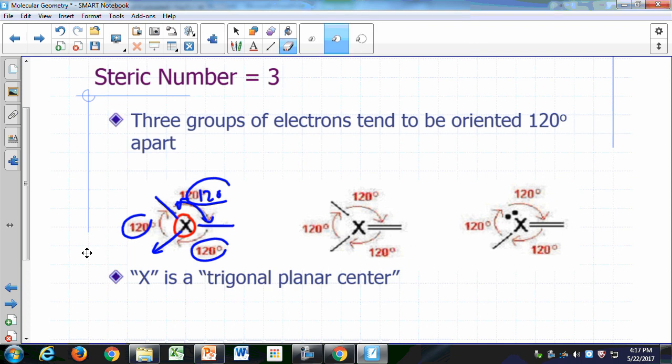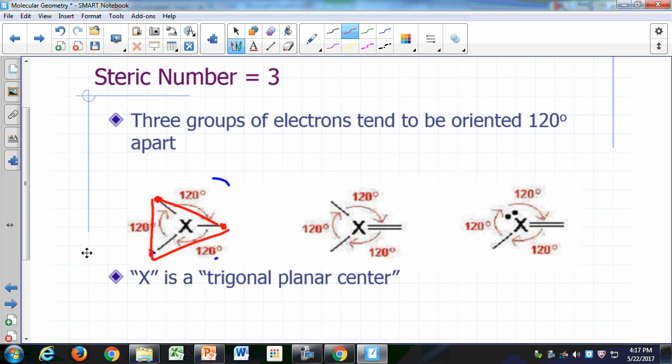You can see, if you were to imagine you have an atom at the end of each of these, then the atoms would form a triangle. And all of these groups will be on the same plane. So we say that x is a trigonal planar center.